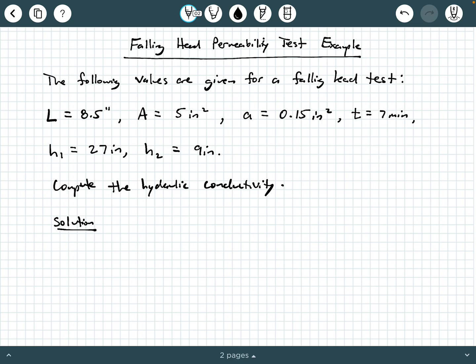So for a simple question like this, you really just obtain our governing equation. You don't need to derive it. You can just take the pre-derived version of the equation, either the natural log version or the log base 10 version. I'll go ahead and use the log base 10 version but we know that hydraulic conductivity is equal to 2.303 times little a capital L over capital A t times log base 10 of h1 over h2.